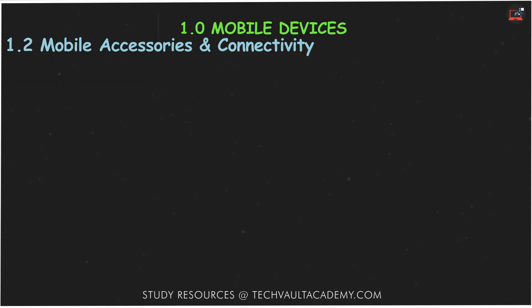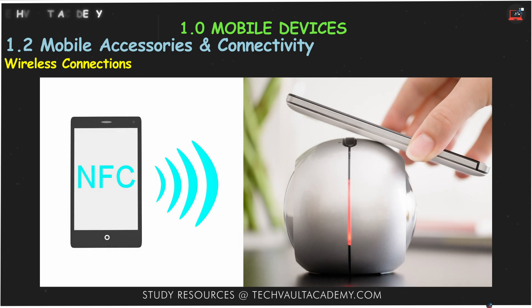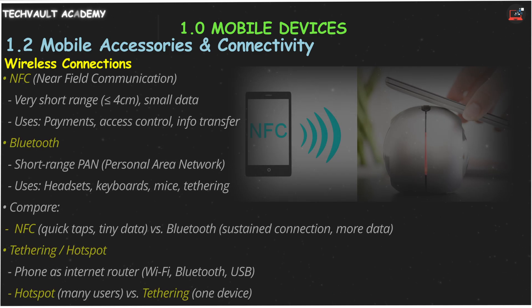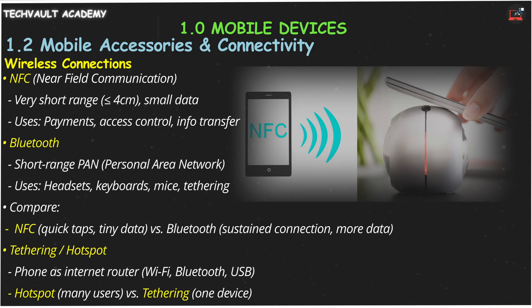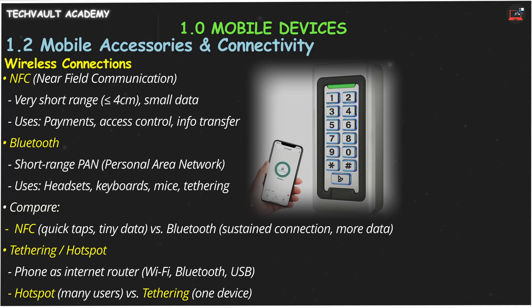Now for wireless connections. NFC, or near-field communication, is like a secret handshake between devices. It works over a very short distance — think just a few centimeters — to transfer small bits of data. It's perfect for payment systems, tap-to-pay, access control like an ID badge on your phone, or quickly sharing a contact card.